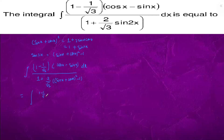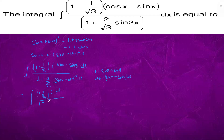It is already 1 minus 1 by root 3. If we put sin x plus cos x equal to t, then dt will be cos x minus sin x dx. So we have dt upon 1 minus (2 by root 3) into (1 by root 3 plus 2 by 3 root 3) t square.